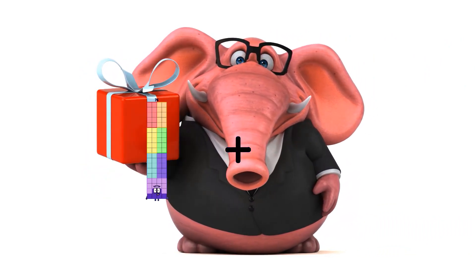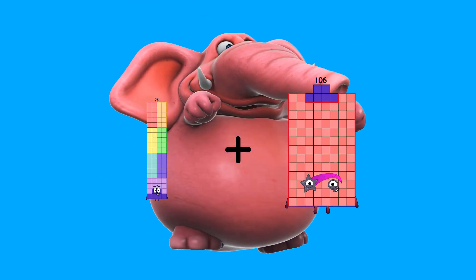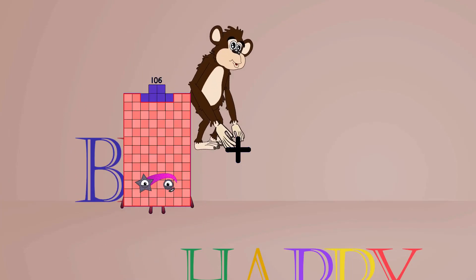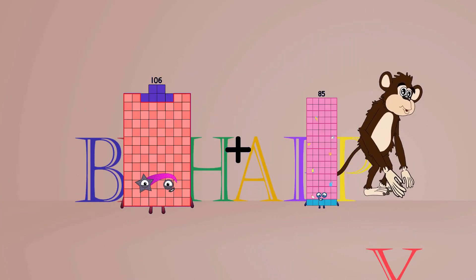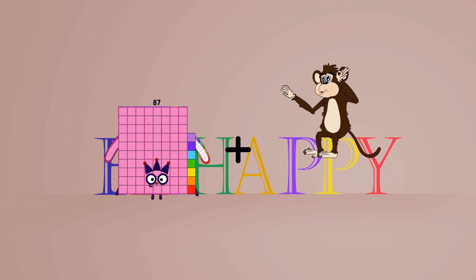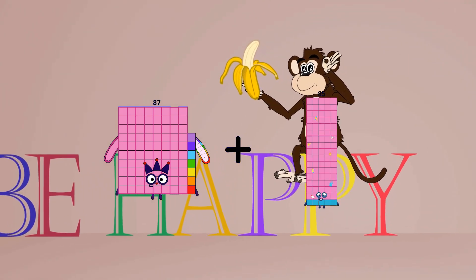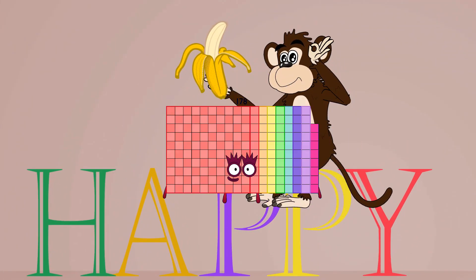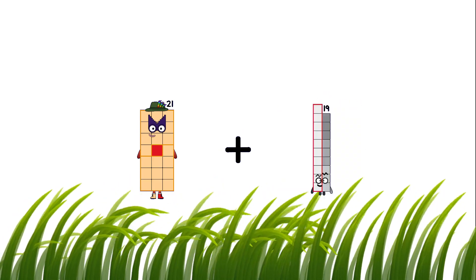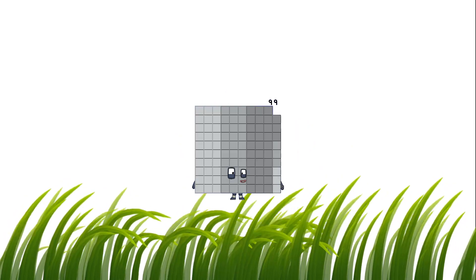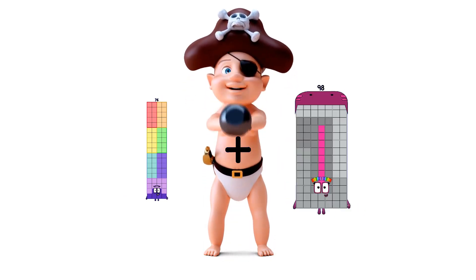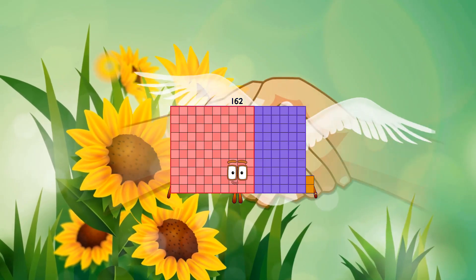76 plus 10 equals 86. 116 plus 75 equals 191. 87 plus 91 equals 178. 21 plus 78 equals 99. 76 plus 86 equals 162.